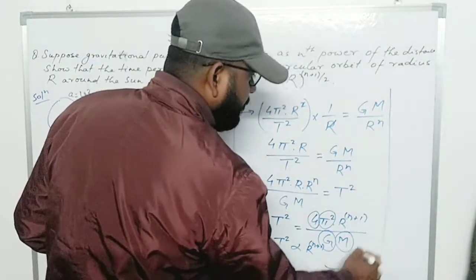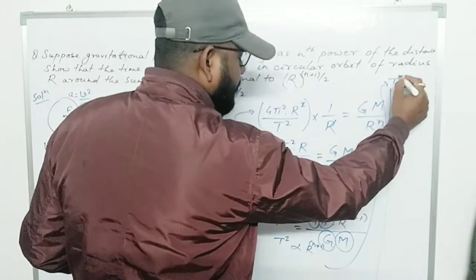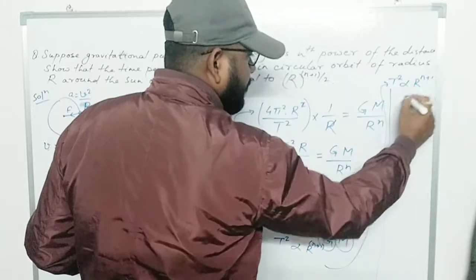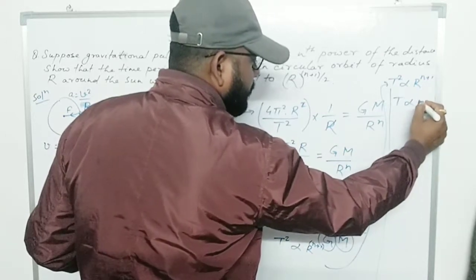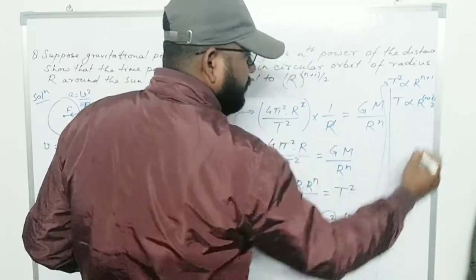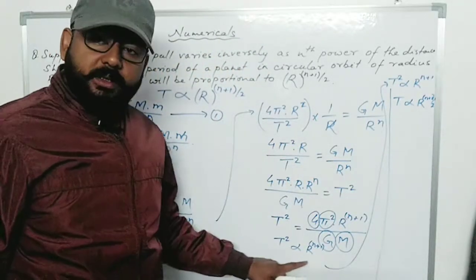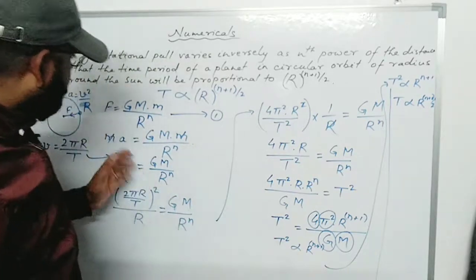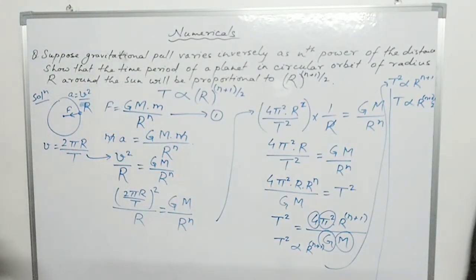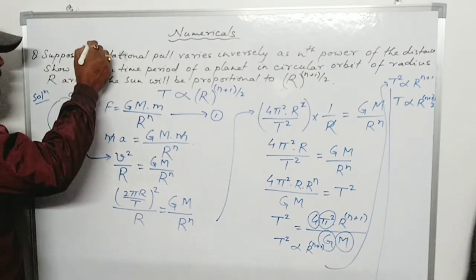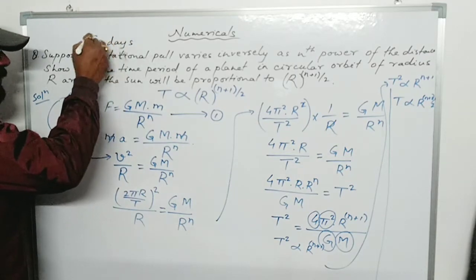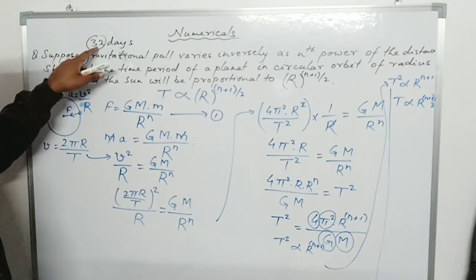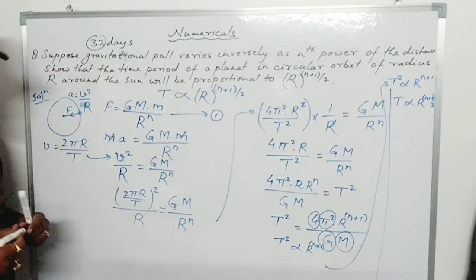Therefore T² is directly proportional to r^(n+1), which means T is proportional to r^((n+1)/2). This completes the proof. A student also asked a related question about two satellites with periods 32 days and 256 days, which can be solved using the same T ∝ r^((n+1)/2) relation.